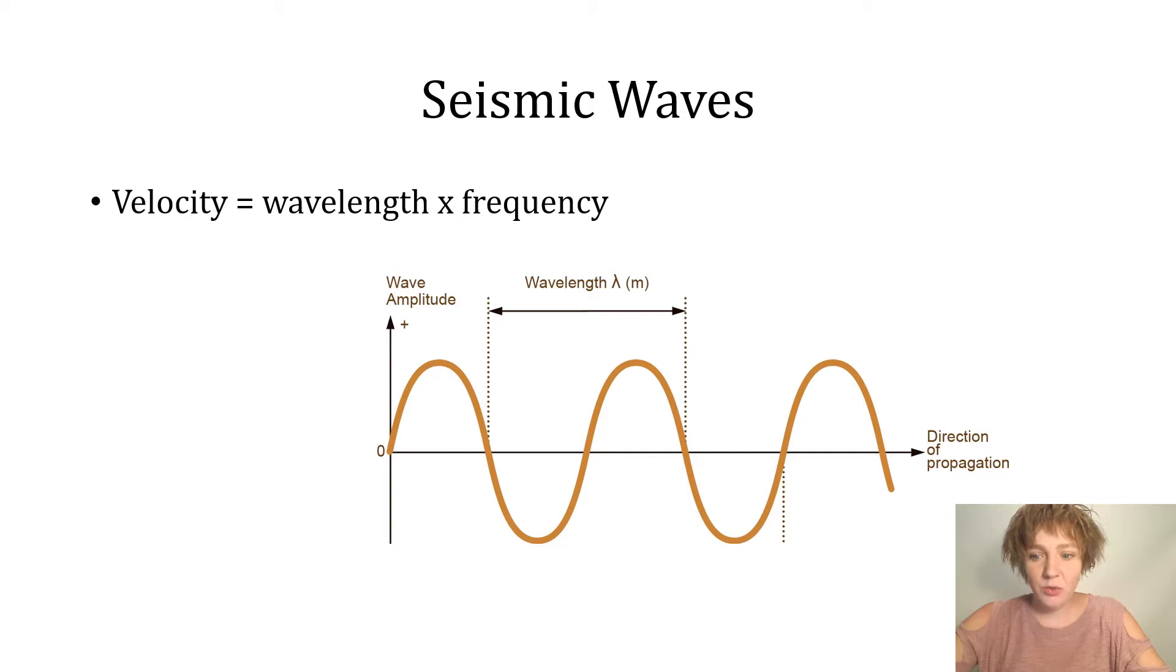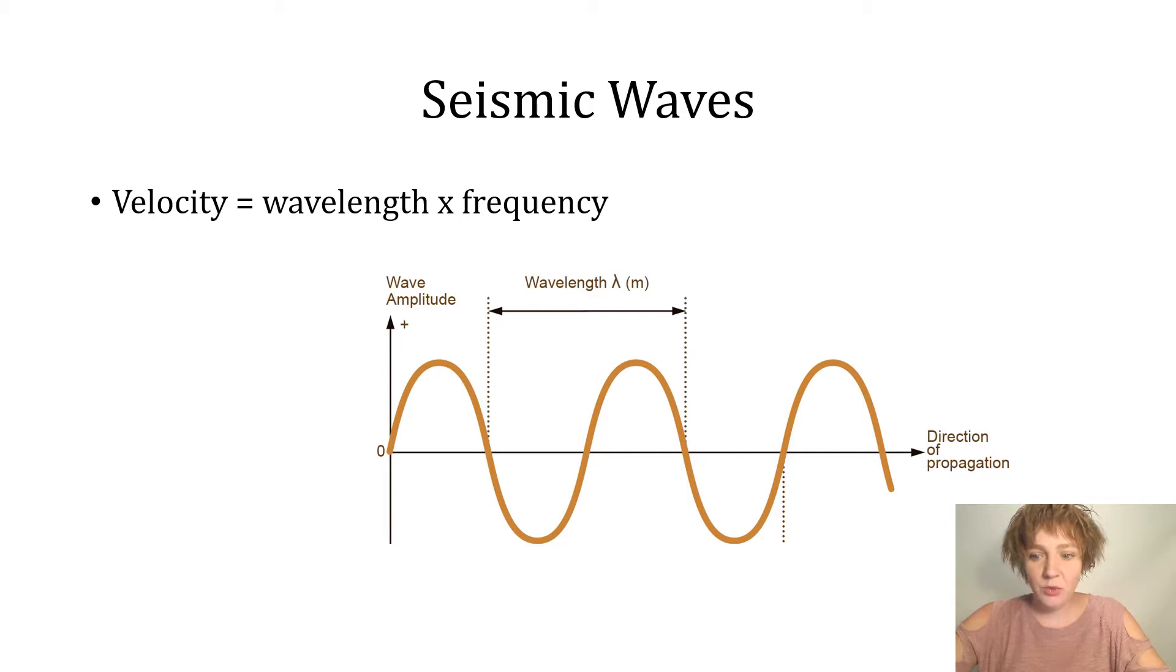Here is an example of a wave. As we've discussed before, the velocity of a wave equals its wavelength times its frequency. The wavelength is simply the length of the wave from one part of the wave to the next identical part of the wave.